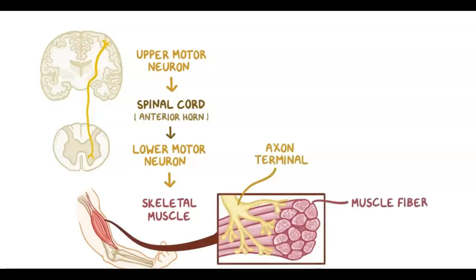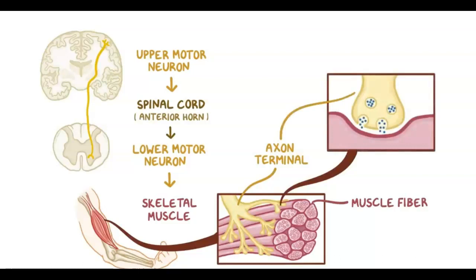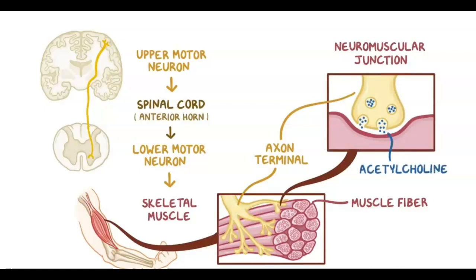At the site where an axon terminal meets the muscle fiber, called the neuromuscular junction, it releases small, membrane-enclosed synaptic vesicles filled with acetylcholine. Acetylcholine is a neurotransmitter that tells the muscle to contract.